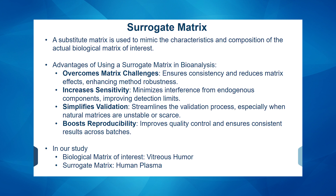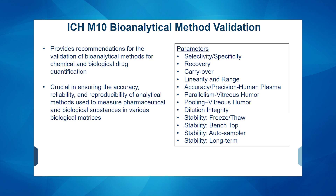In our study today, the biological matrix of interest is vitreous humor and our surrogate matrix is human plasma. Let's briefly discuss what ICH-M10 bioanalytical method validation is. It provides recommendations for validation of bioanalytical methods and ensures the accuracy, reliability, and reproducibility of any analytical methods. There are key parameters to consider while performing the validation per ICH-M10 guidelines, and I'm going to walk you through each of these parameters and their importance.